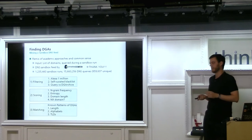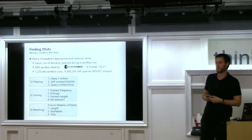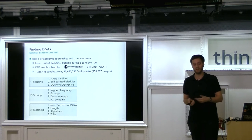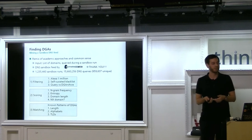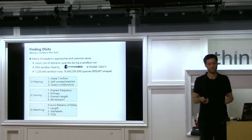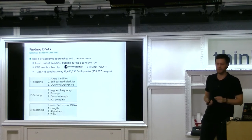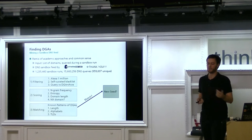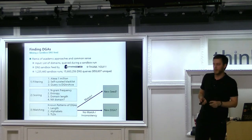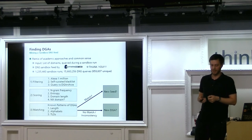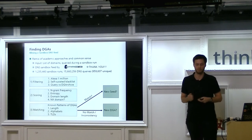The matching step is interesting: if I have a match for many domains but they're not in DGArchive, I likely have a new seed, so I look at the sample, extract the seed, and push it into DGArchive. If I have no match or inconsistent matches, it's likely a new DGA entirely. It's a lot of handwork, but I think it gives quite good results.